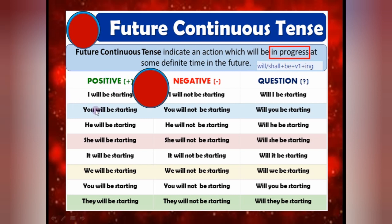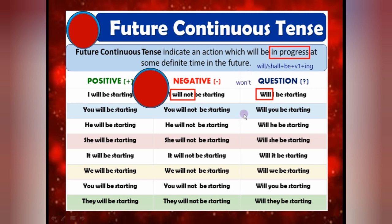For the positive one: 'I will be starting' — will/shall plus be plus ing. For the negative one, I put 'not' after the helping verb: 'I will not be starting.' For the question, simply put the helping verb in front of the sentence and at the end put a question mark: 'Will I be starting?' 'I will be starting.' 'I won't be starting' — as I told you, will not abbreviates to won't, not 'willent.' 'He will be starting. He won't be starting. Will he be starting?' So for future continuous: will/shall plus be plus ing.